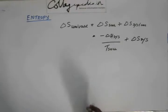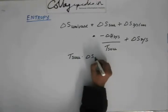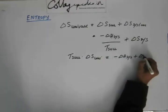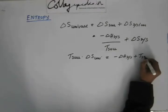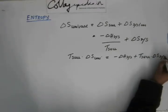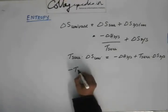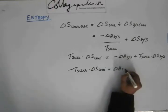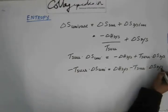Now, if we multiply through by T_surrounding, we get: T_surrounding × ΔS_universe = minus ΔH_system + T_surrounding × ΔS_system. Then if we multiply both sides by minus 1, we get: minus T_surrounding × ΔS_universe = ΔH_system minus T_surrounding × ΔS_system.